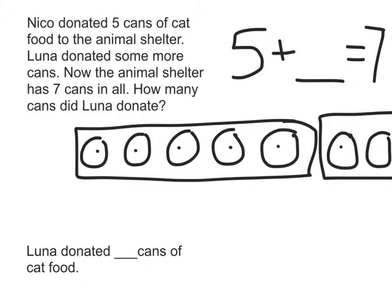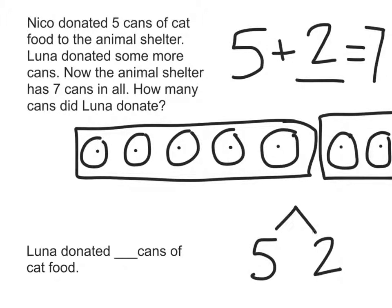One, two. We can also write a number bond to show that five and two make seven.